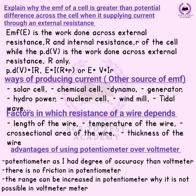The answer is: EMF covers both external and internal resistance — EMF is work done across both external and internal resistance. But potential difference is work done across only the external resistance. That's why PD equals IR (external only), but EMF equals I times (R + r), where r is the internal resistance.